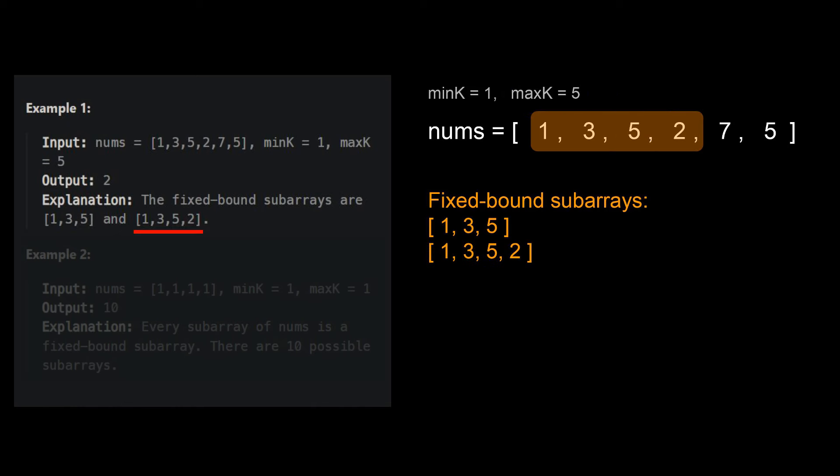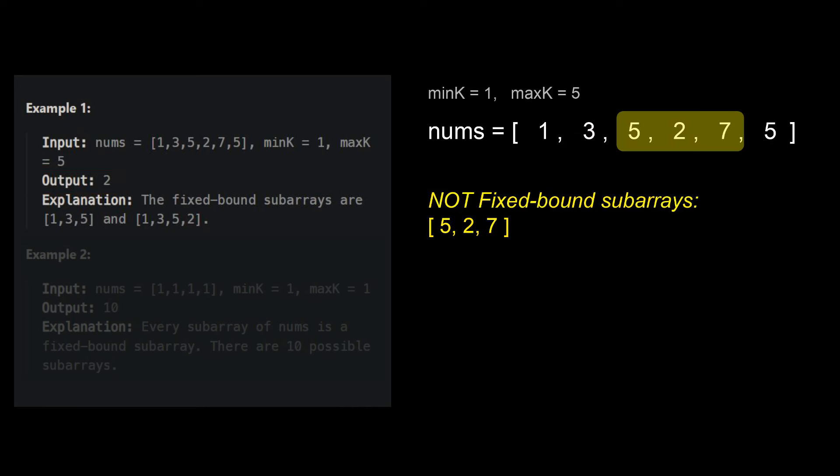1, 3, 5, 2 is also a fixed bound subarray and it fulfills the same constraints. The output for example 1 is therefore 2, since there are two fixed bound subarrays. The subarray 5, 2, 7, for instance, will not be a valid subarray because its maximum is 7, and that does not match max k, which is 5.